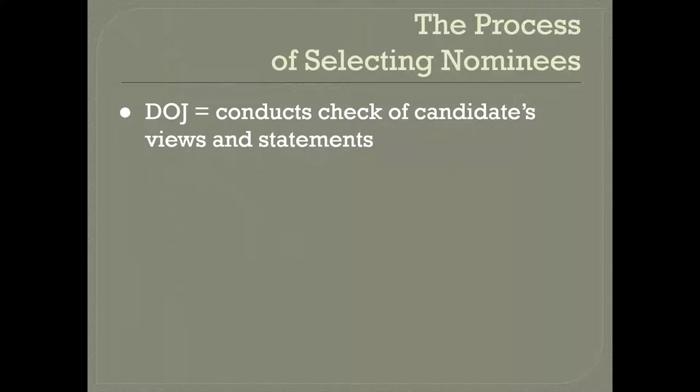In addition to the FBI's criminal and ethical background check, the Department of Justice will conduct a check of the candidate's past views and statements, looking into opinions they may have written, speeches they may have given, or books or law review articles they may have written — not only to make sure that their views are compatible with the president's views, but also to make sure that they haven't said anything very embarrassing or extreme that would cause the Senate to reject them.